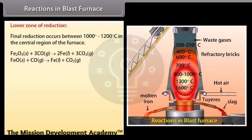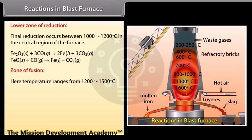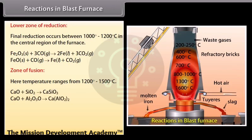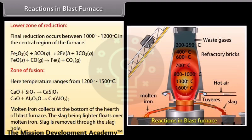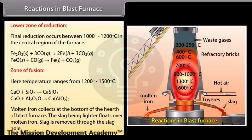Zone of fusion: Here, temperature ranges from 1200 degree to 1500 degree Celsius. Limestone decomposes into calcium oxide which acts as a flux and combines with the impurities of SiO2 and Al2O3 and removes them as slag. Molten iron collects at the bottom of the hearth of blast furnace. The slag being lighter, floats over molten iron. Slag is removed through the slag hole.